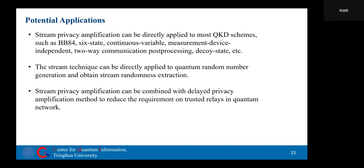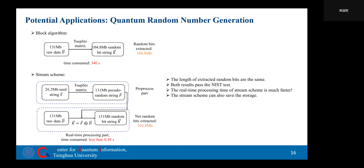As for potential applications, stream-private amplification can be directly applied to most QKD schemes, such as BB84, Six-State, and so on. It can also be directly applied to quantum random number generation to obtain stream randomness extraction. We carried out a numerical experiment using the conventional block scheme and the stream scheme to extract 104.8 megabits of random numbers from 131 megabits of raw data respectively. The results show that the block scheme takes about 340 seconds while the stream scheme takes less than 0.34 seconds in real-time post-processing.